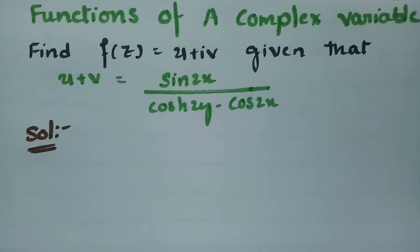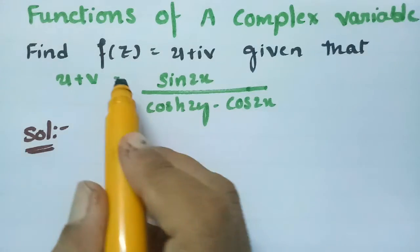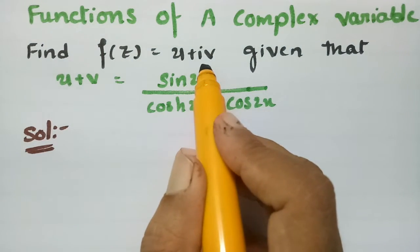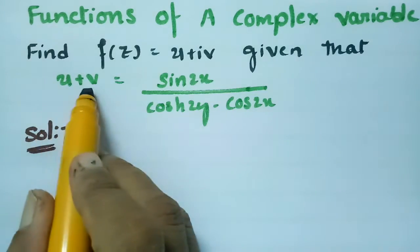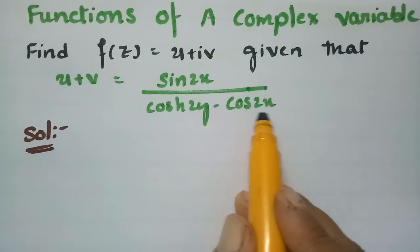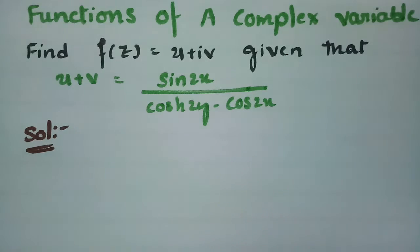Today's video I am going to solve a problem from functions of complex variables. I am going to find the analytic function f(z) which is in the form of u + iv, given that u + v = sin(2x) / (cosh(2y) - cos(2x)). For finding the analytic function I will use the Milne-Thompson method.